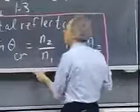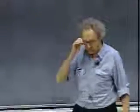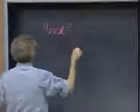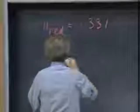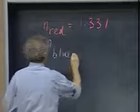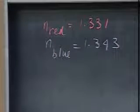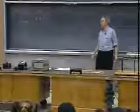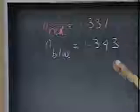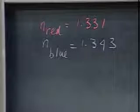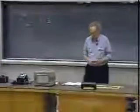The frequency effect is very noticeable. Red and blue light have different frequencies, so the index of refraction differs for each. In water, the index for red light is 1.331, while for blue light it is 1.343 — blue light is about one percent slower in water than red light. This phenomenon — that the speed of electromagnetic radiation depends on wavelength or frequency — is called dispersion.